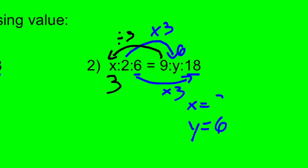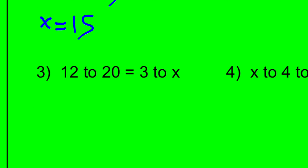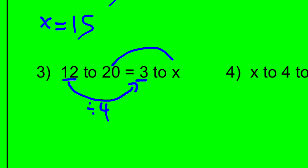Let's look at a couple others. I have two equivalent ratios, and I know the first term of each. To go from 12 to 3, I divide by 4 — the second ratio is 4 times smaller than the first. So I do the same to go from 20 to x: 20 divided by 4 is 5. Therefore x is equal to 5.